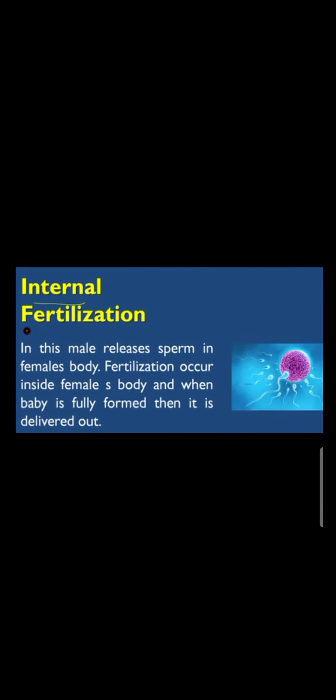The zygote develops outside the body and develops into an embryo. For this pattern to succeed, the male and female must shed their gametes in large numbers at the same time and place, because from the large number there is some possibility of fertilization. The example of external fertilization and external development is the frog.